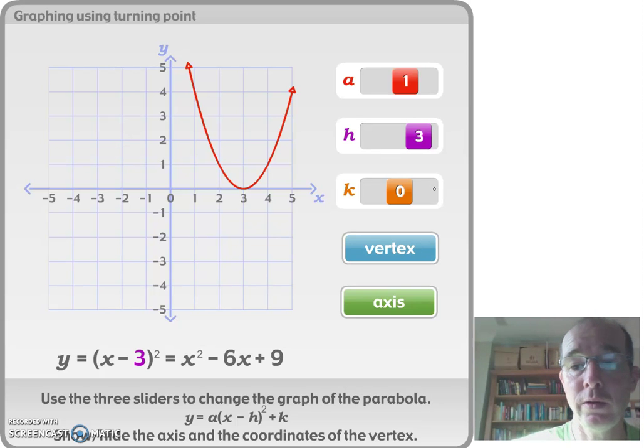You might notice my turning point of the graph here, also known as the vertex, is now 3 comma 0. It had previously gone through the origin of 0 comma 0.